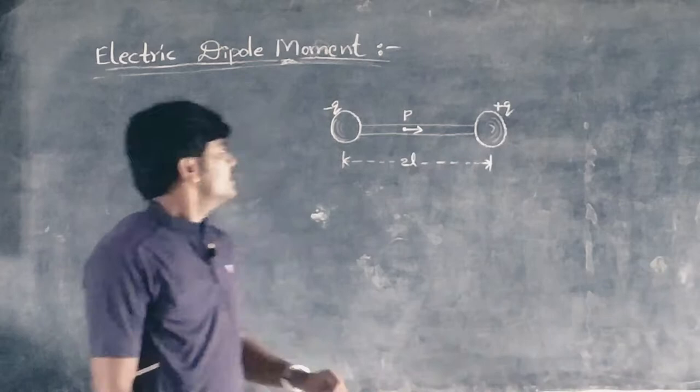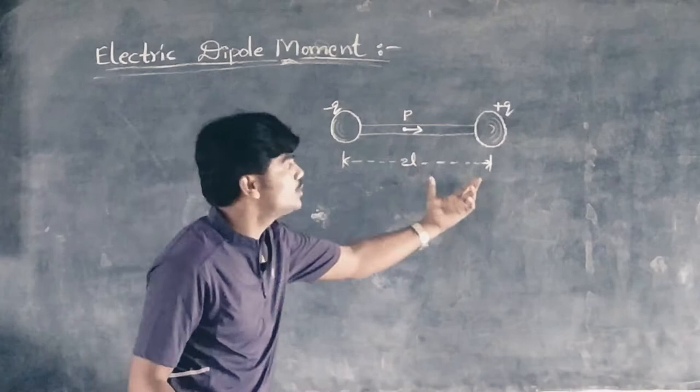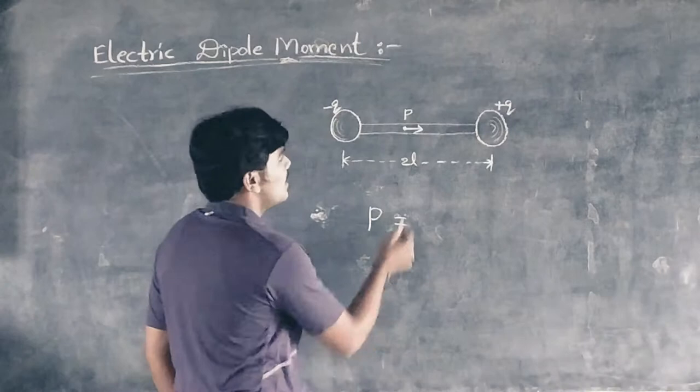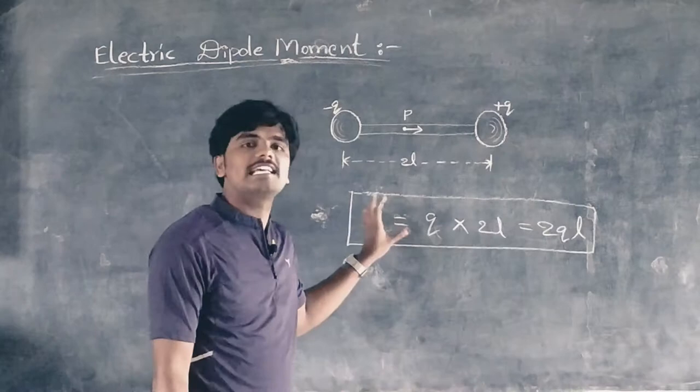The product of either charge — either positive or negative — and the distance between the two charges is called electric dipole moment. Mathematically, the electric dipole moment P is equal to Q into 2L, so P = 2QL. This is the expression for electric dipole moment.